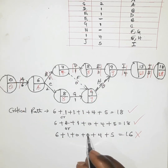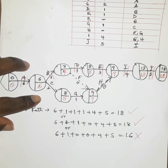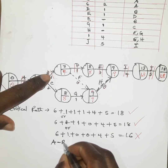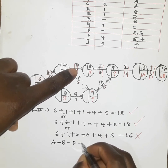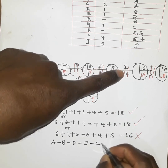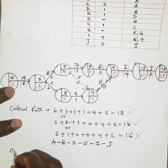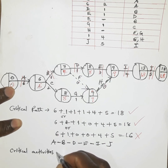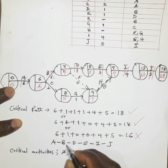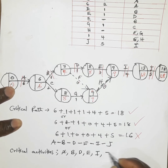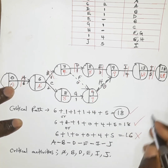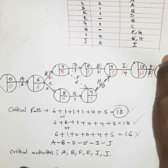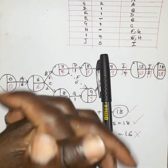We illustrate the critical path as: A to B to D to E to I to J. The critical activities are A, B, D, E, I, J. Eighteen weeks is the shortest period in which this particular project will be undertaken in order to arrive at its completion. Thank you — please don't forget to subscribe.